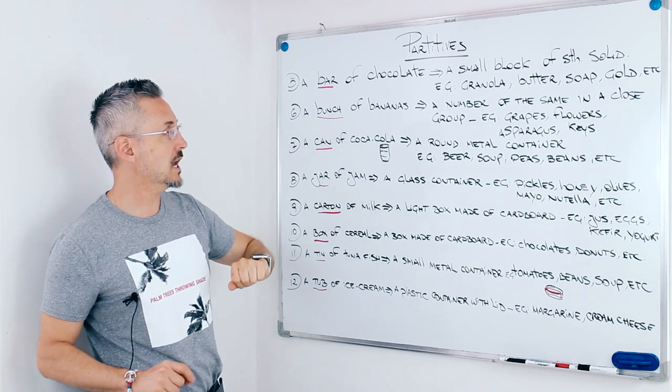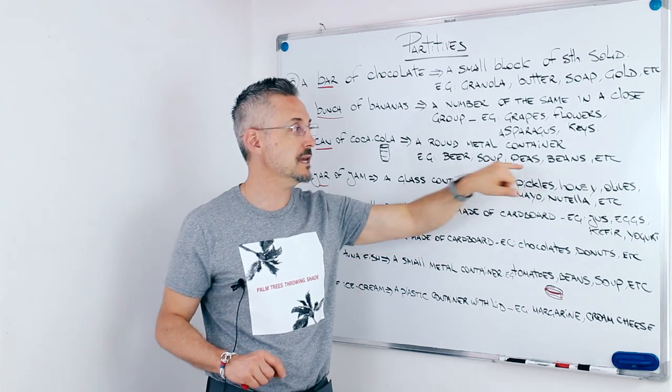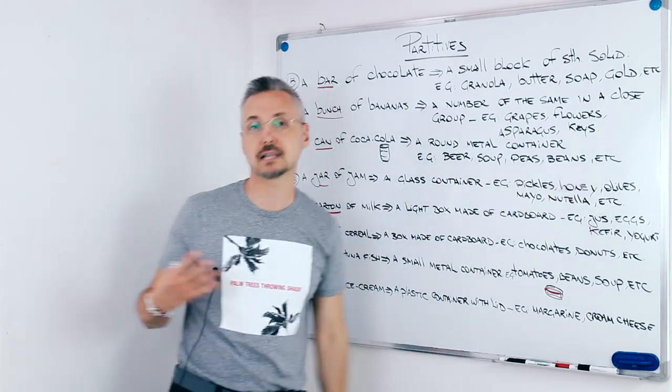So, we said a can of Coca-Cola, and a can of beer, a can of soup, a can of peas, a can of beans, etc.